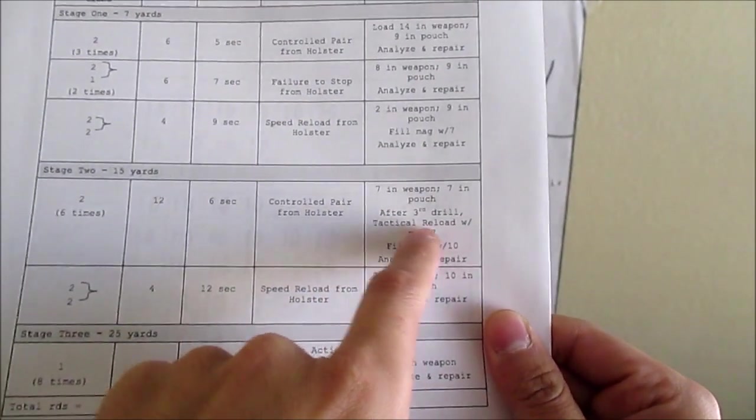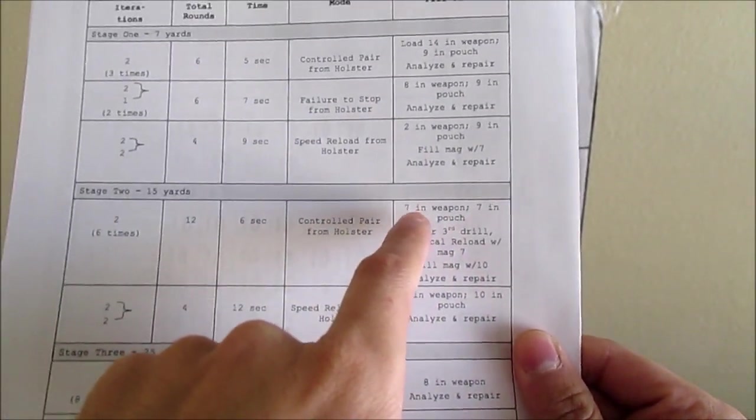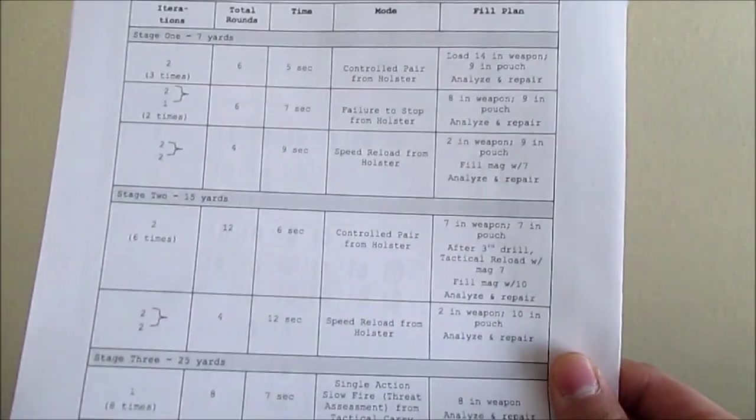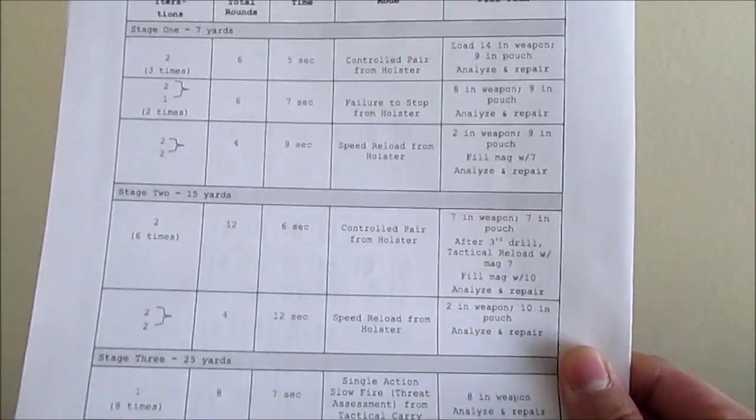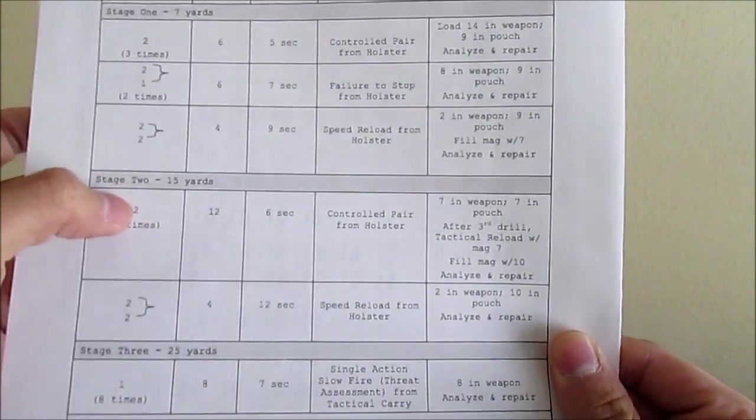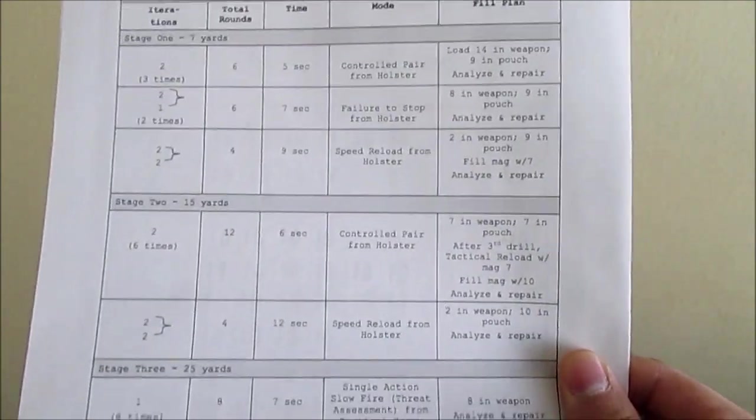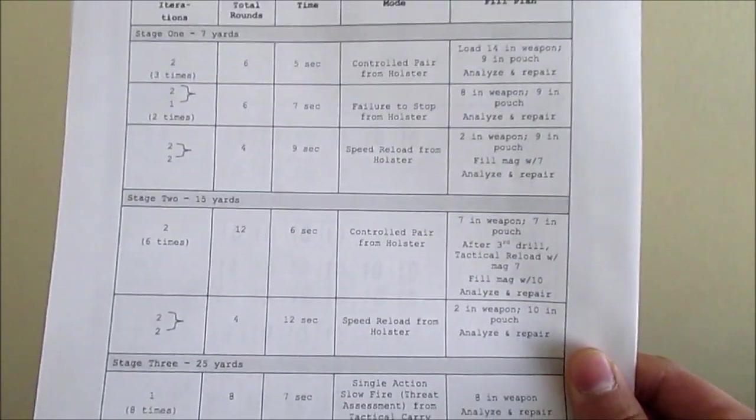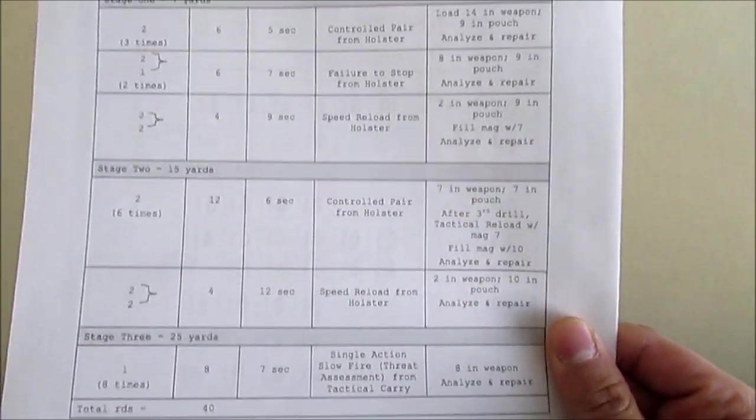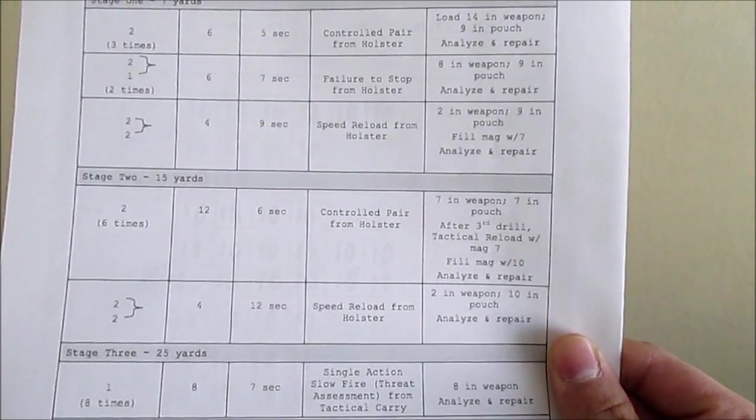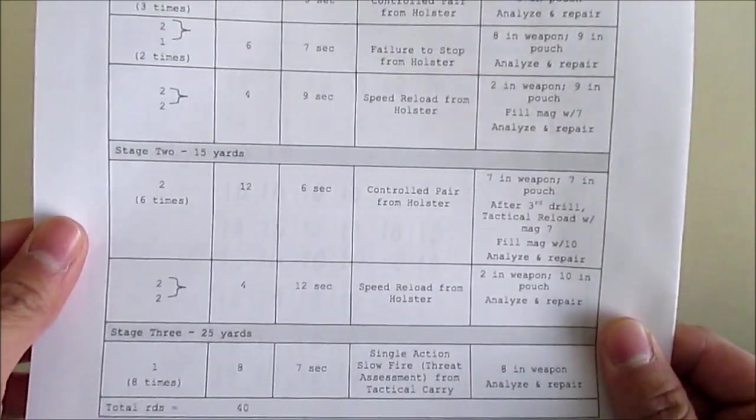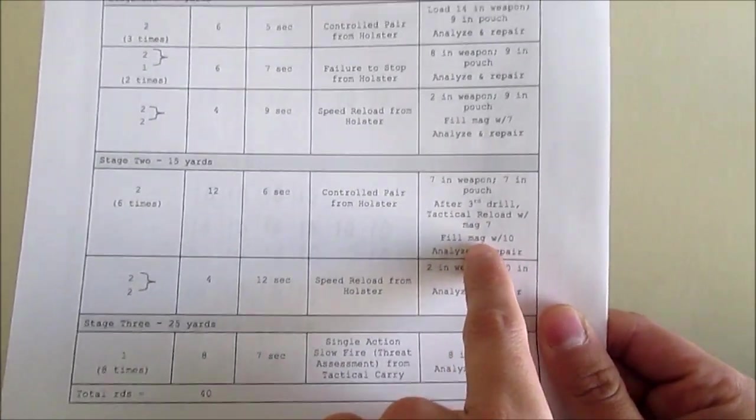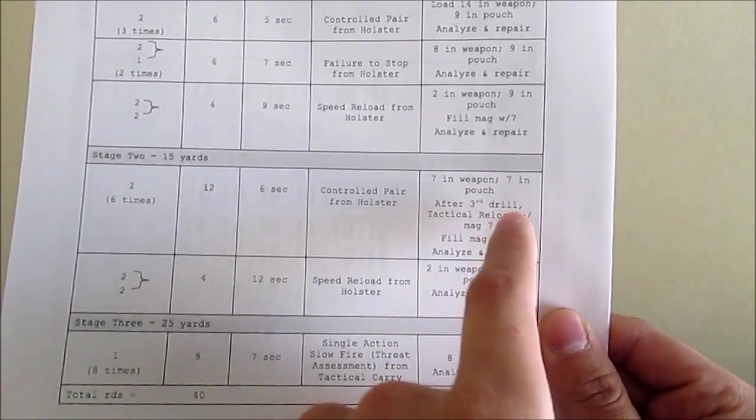After the 3rd drill, you'll have to do a tactical reload. So you'll have 7 in the weapon. 7 means 1 in the chamber, 6 in the magazine. So after you do your first 3 rounds of this, your magazine will be empty. So you'll have to remember that. After the 3rd drill, you need to reload. You need to take out the empty mag and put in your fresh mag. And then you finish this round. And then you fill your empty mag with 10 more rounds.